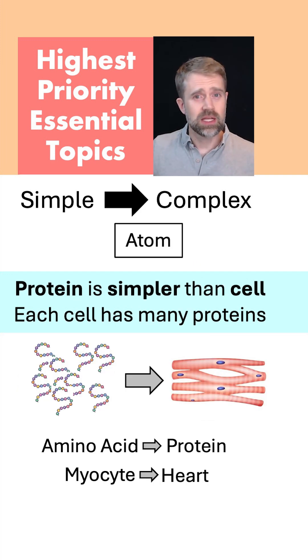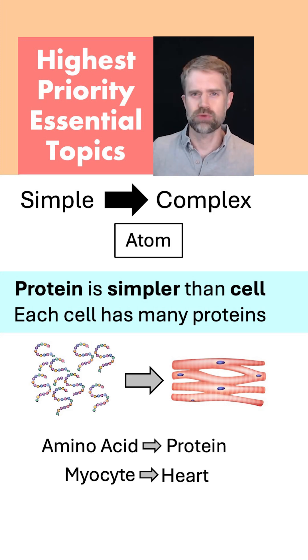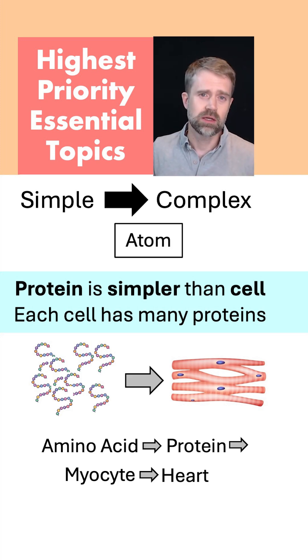And a protein is way simpler than a cell. Each cell has zillions of proteins, so we can say protein is simpler than myocyte.